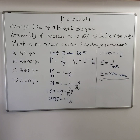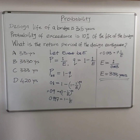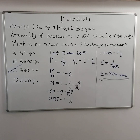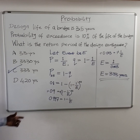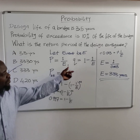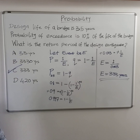When you compute that, E is approximately 333 years. So the return period for this design earthquake is 333 years, and the answer is choice C. This is a straightforward problem, but it can be challenging if you don't understand that you break it down to one year first, then project it to 35 years — the rest is just arithmetic.